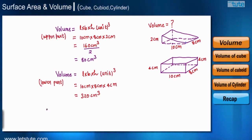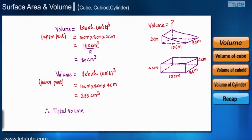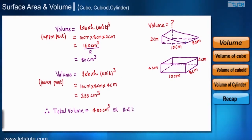Therefore, the total volume of this shape is 320 cm³ + 80 cm³ = 400 centimeter cubed, which equals 0.4 liters.